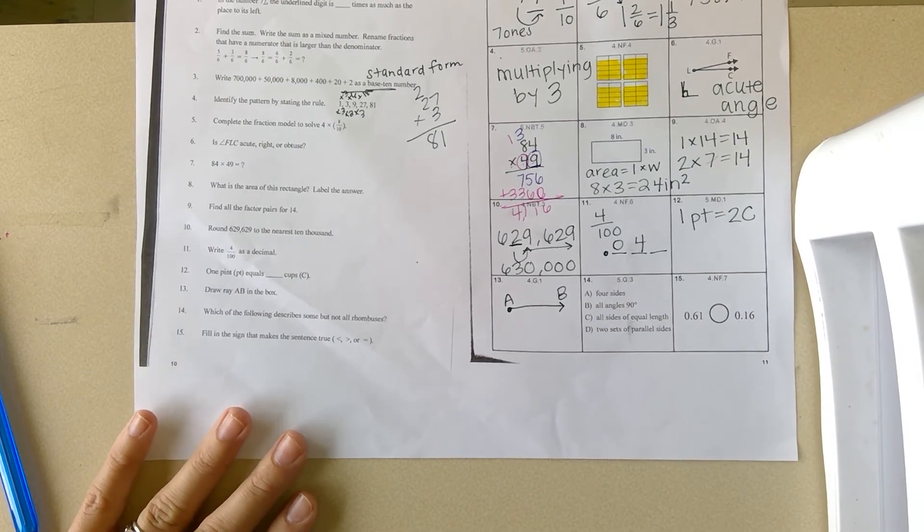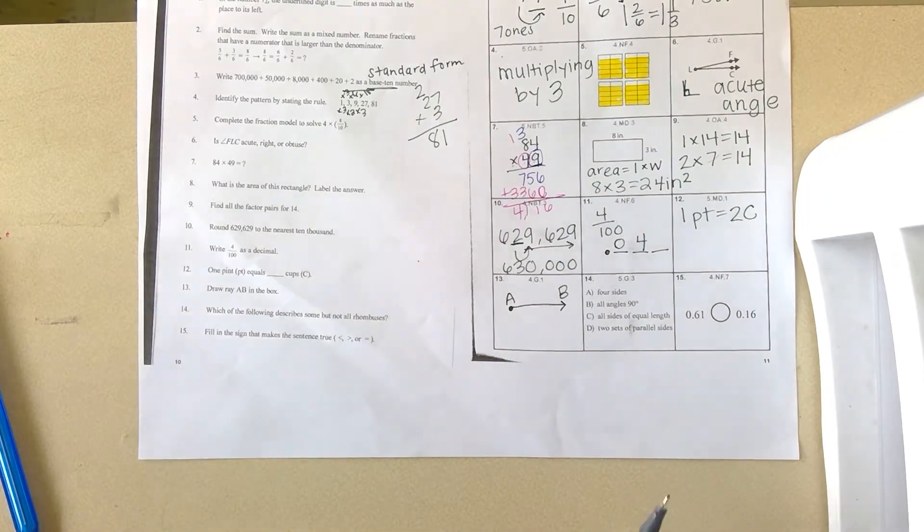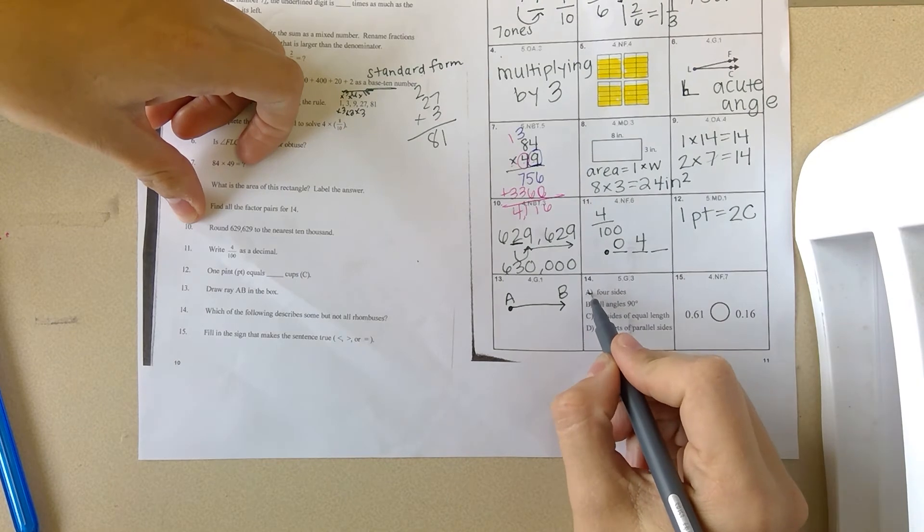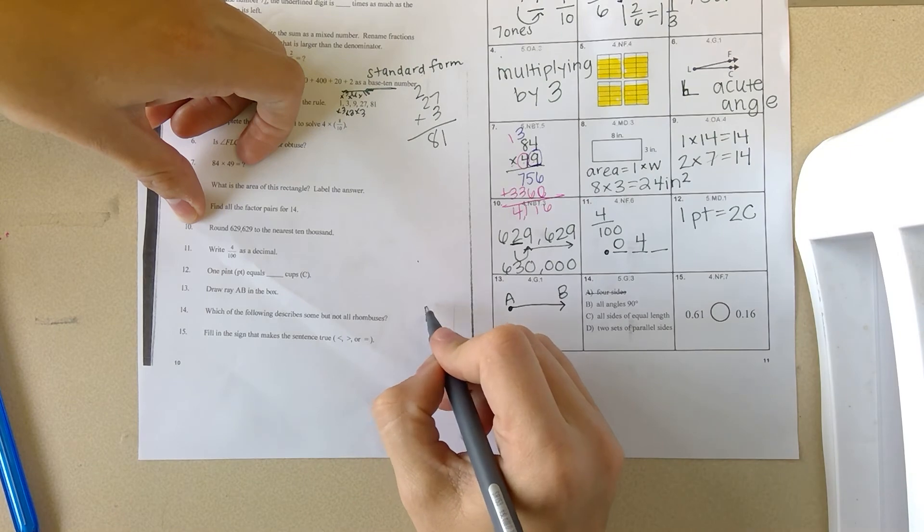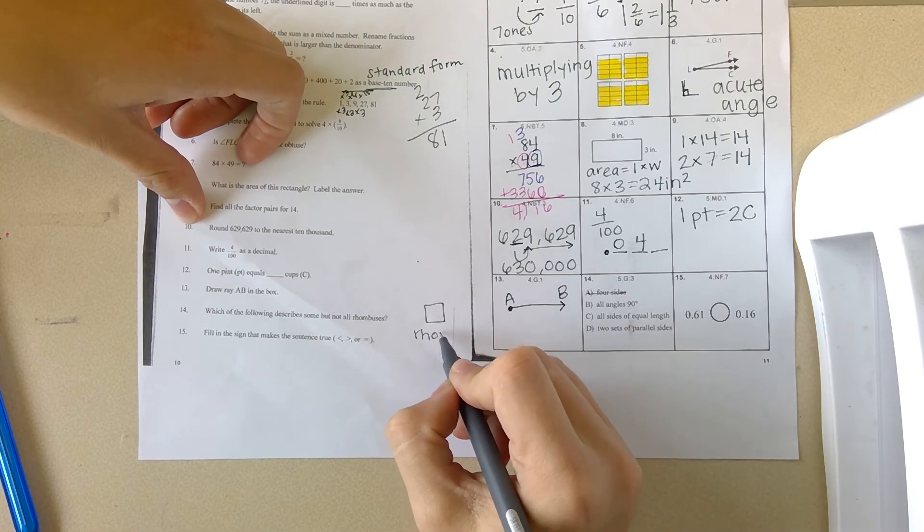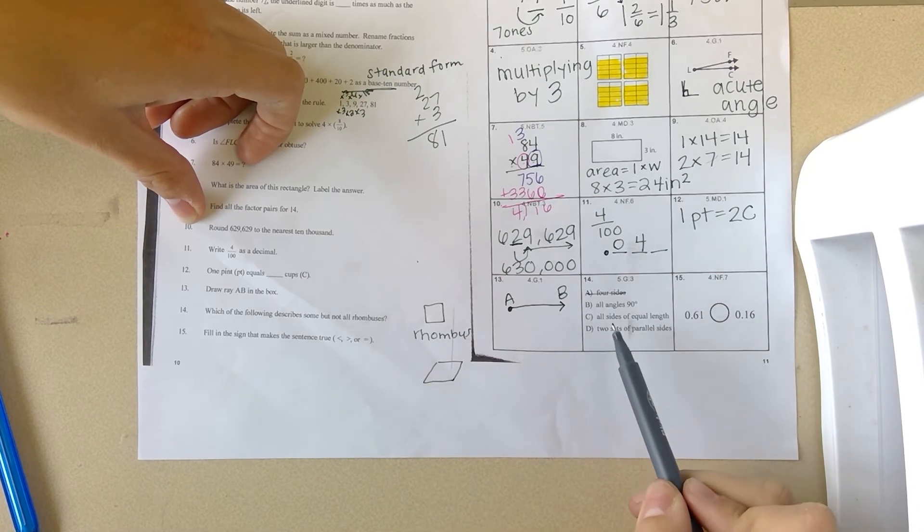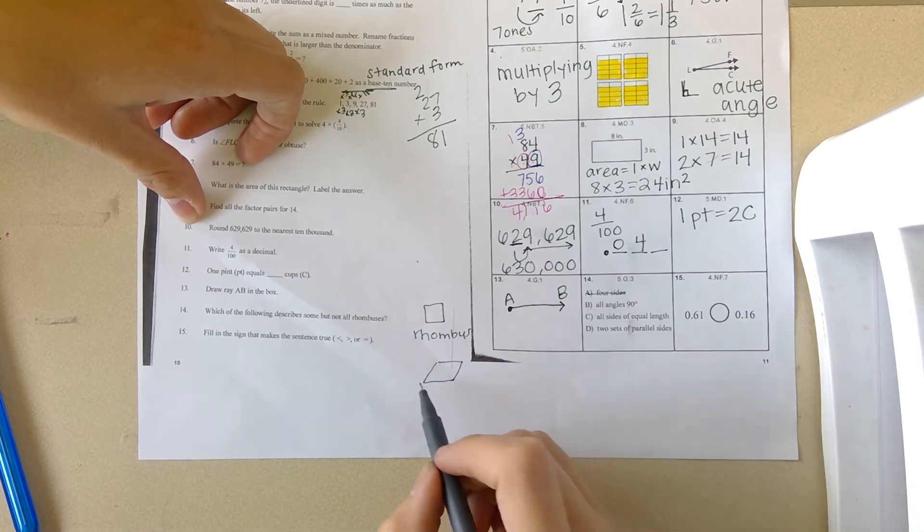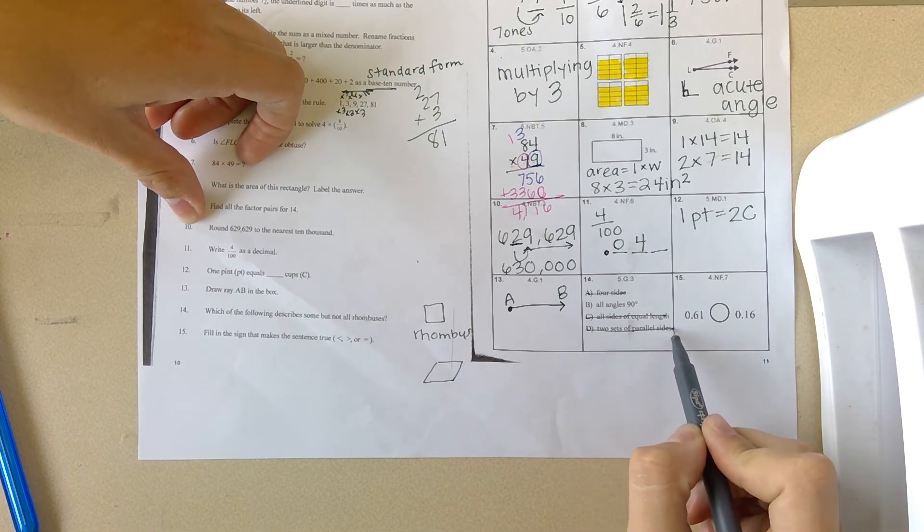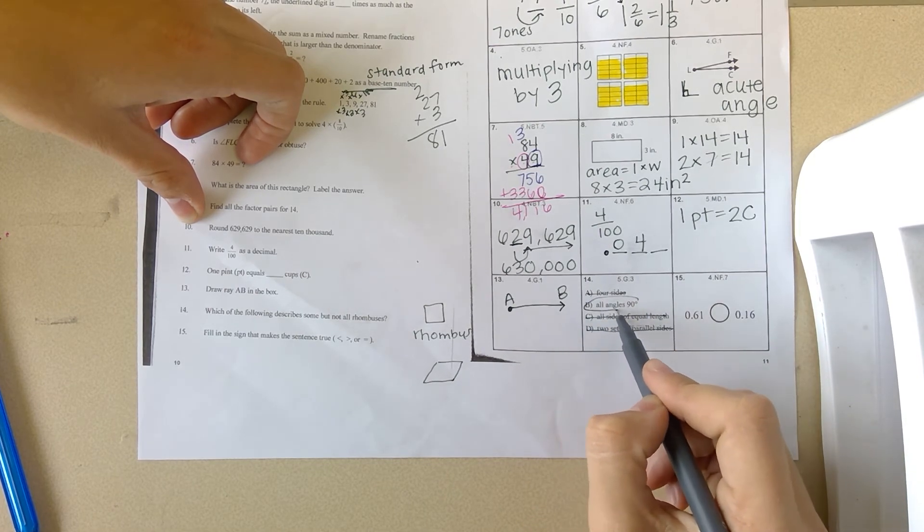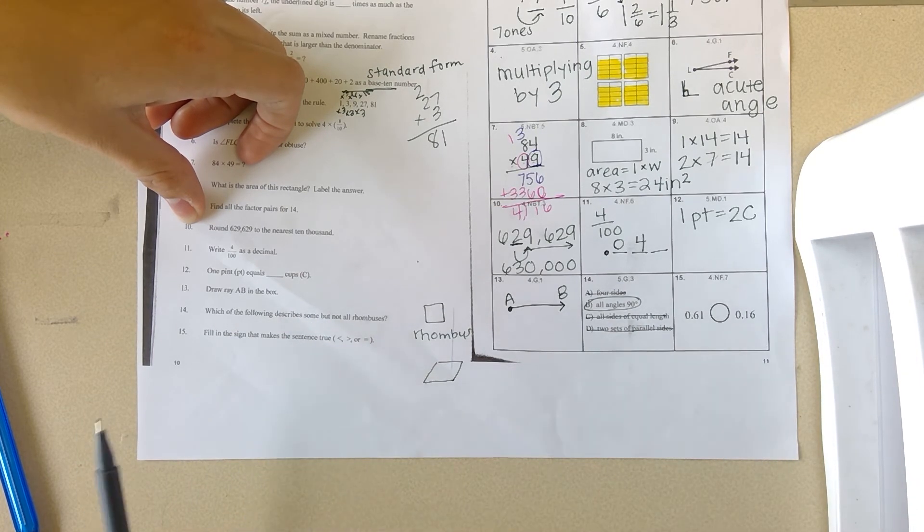Number fourteen: which of the following describes some but not all rhombuses? Not all but some of them. All rhombuses have four sides, so that wouldn't be it. All angles are 90 degrees—not all of them but some. For example, a square would be a rhombus, but most rhombuses you see as the stretched out diamond. All sides of equal length—all of them have that. Two sets of parallel lines—parallel, parallel. So some have all angles of 90 degrees but not all. It says which describes some but not all. That would be B.